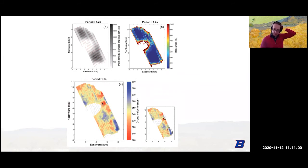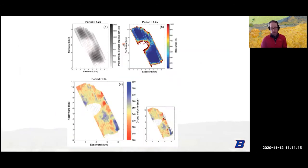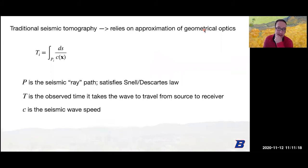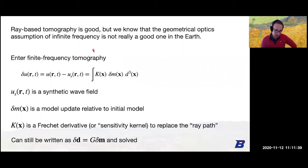That's straight-ray tomography — a very simple inverse method. The hardest part is computing G, which requires a ray tracer solving the eikonal equation. Based on the geometric optics approximation, we're assuming infinite frequency, which isn't a good approximation in the earth. In the late 90s and early 2000s, people developed finite frequency tomography.